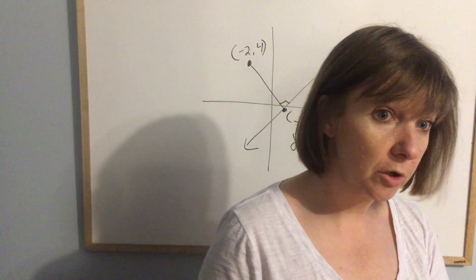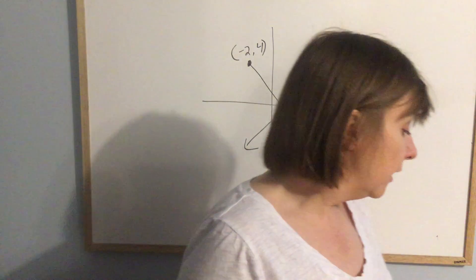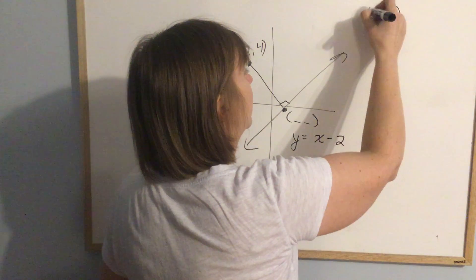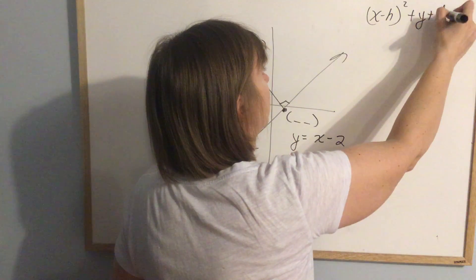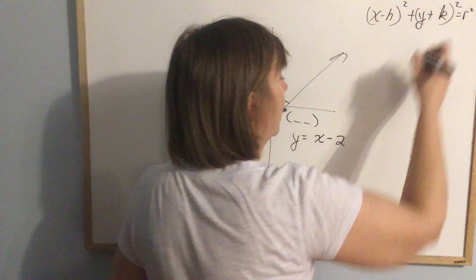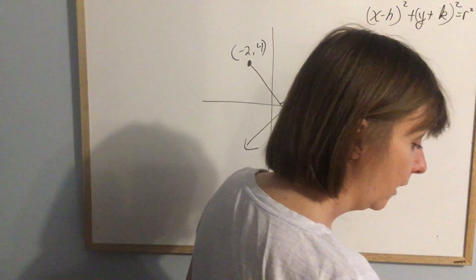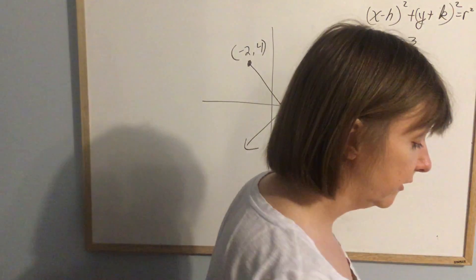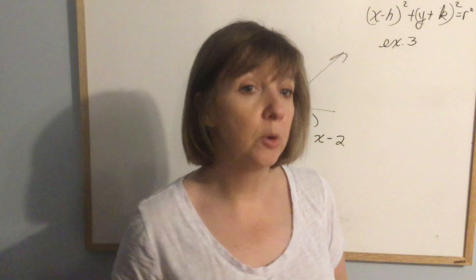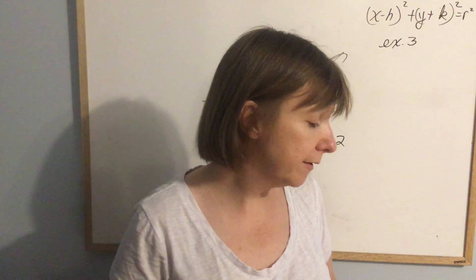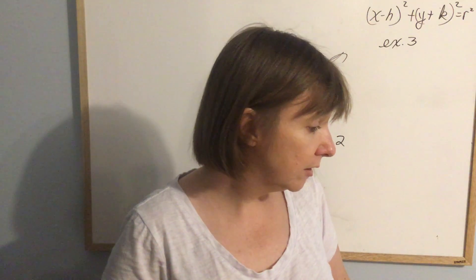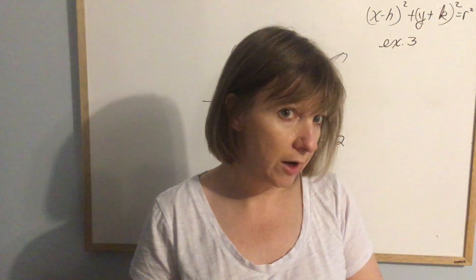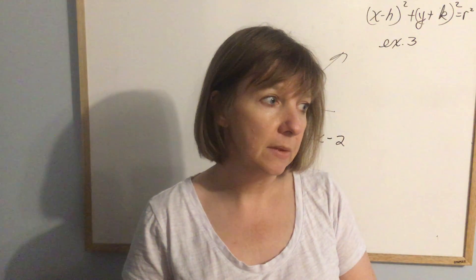Section 8.4, which you're just finishing up — I will be checking that homework Friday morning — was the equation of the circle: (x − h)² + (y − k)² = r². I can tell you that example 3 in your text is something I will almost certainly put on the test, so just be prepared for that.